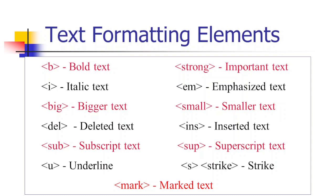Then you have subscript and superscript — all of you know these. If you use H2O, you can use the subscript element: it places half a character below the normal line. We use subscript for that. Half a character above the normal line is superscript — for example, footnotes use superscript.